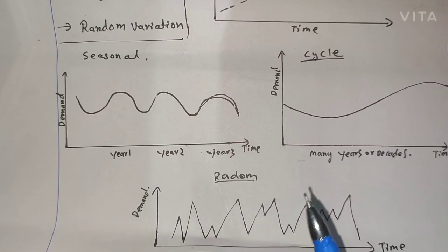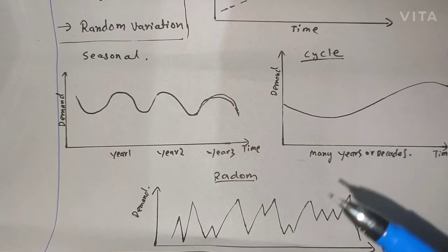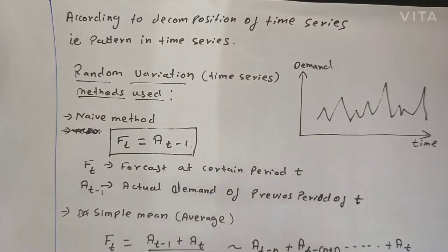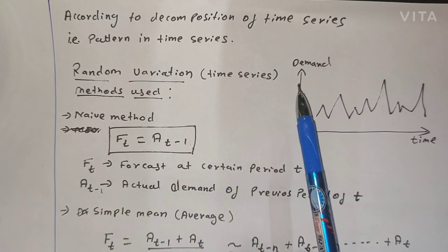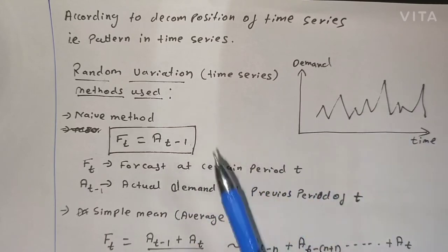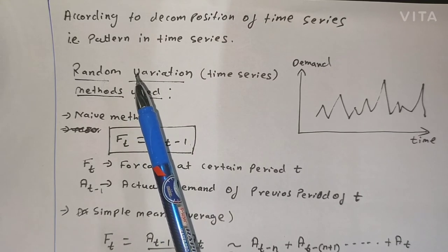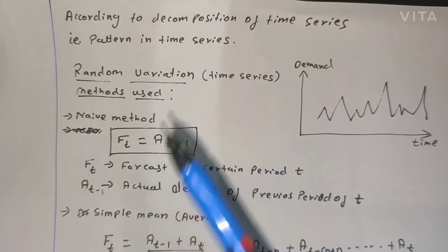For random variation, prediction is mostly done over a very close period. For example, if you are planning to find a forecast for February, you will try to take the forecast of January — you take the close period for random variation. After decomposition, there is random variation, seasonal variation, trend variation, and cycle variation. We will take random variation first in the time series. The methods we can use include the naive method, simple mean average, simple moving average, weighted moving average, and exponential smoothing.